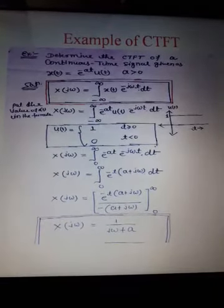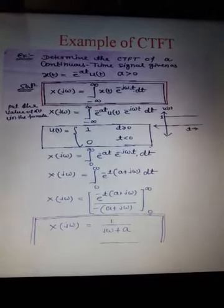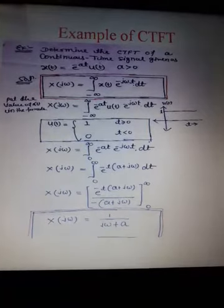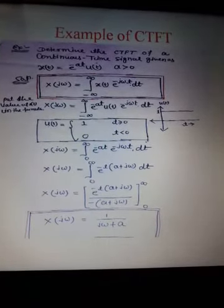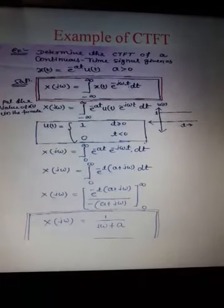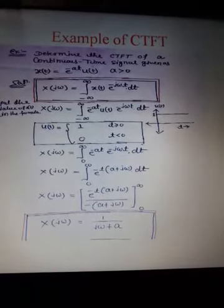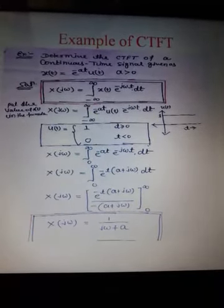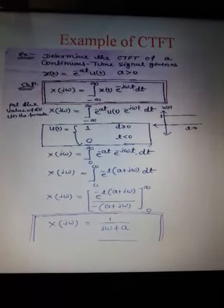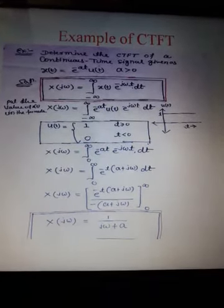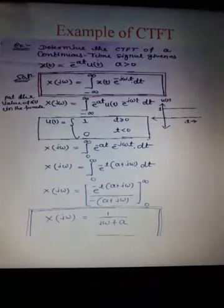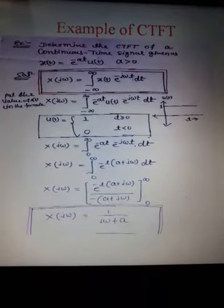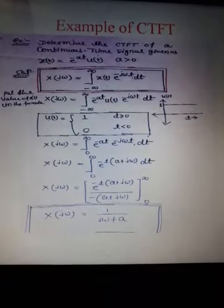Example of CTFT: Determine the continuous-time Fourier transform of x(t) = e^(−at) u(t), where a > 0. The function e^(−at) u(t) is a single-sided function because e^(−at) is multiplied by the unit step function u(t), which exists only for t ≥ 0. The unit step function u(t) equals 1 for t ≥ 0 and 0 for t < 0. When any function is multiplied by u(t), the resulting function exists on the positive side only.